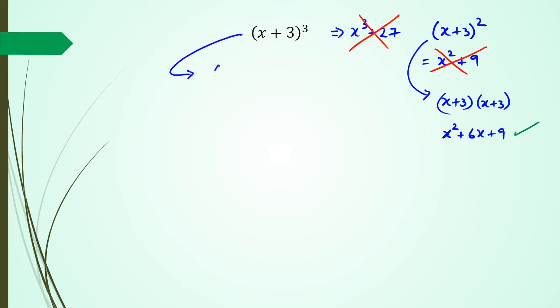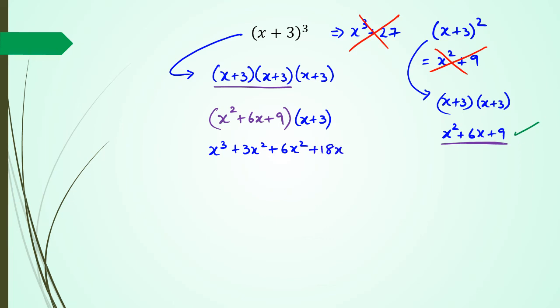So what we need to do is expand the bracket out. So we're going to have (x plus 3) times (x plus 3) times (x plus 3). Now, I've already worked out what (x plus 3) squared is here. So I'm going to rewrite that as x squared plus 6x plus 9. And I need to multiply this with (x plus 3). So x squared times x is going to be x cubed. x squared times 3 is 3x squared. 6x times x is 6x squared. 6x times 3 is 18x. 9 times x is 9x. 9 times 3 is 27.